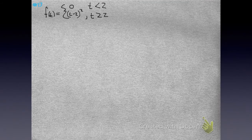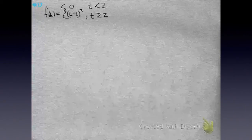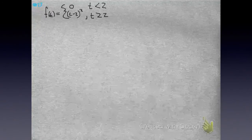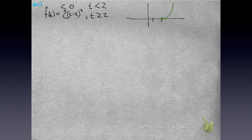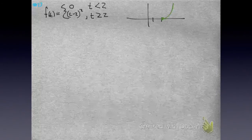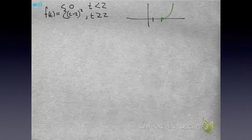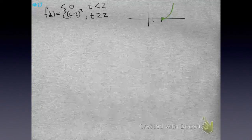Now, since we've gotten out of our routine, we need to find the Laplace transform for this piecewise function. So, I graphed that piecewise function — it's the right side of a parabola, because that's a parabola shifted right too. Now, what do we do?